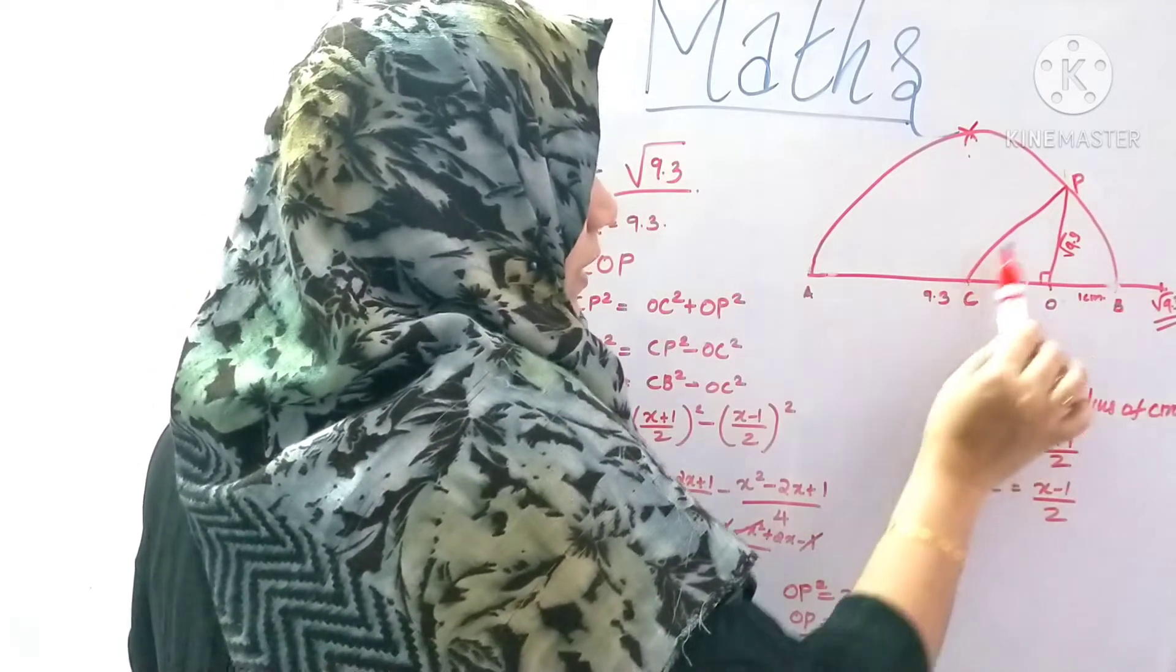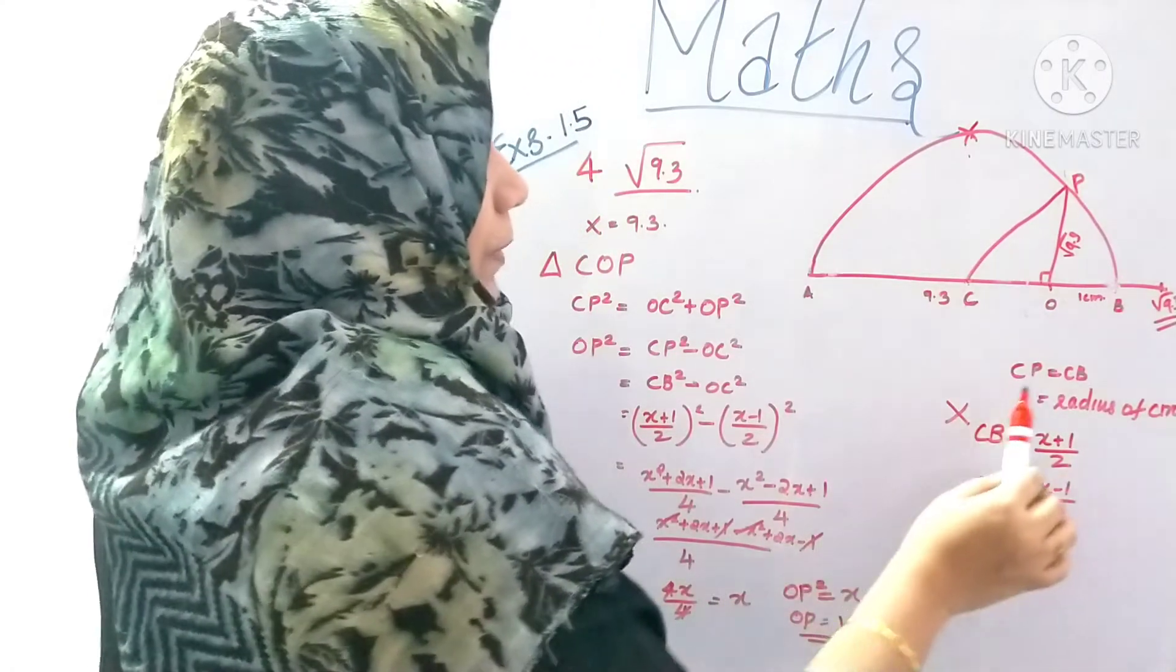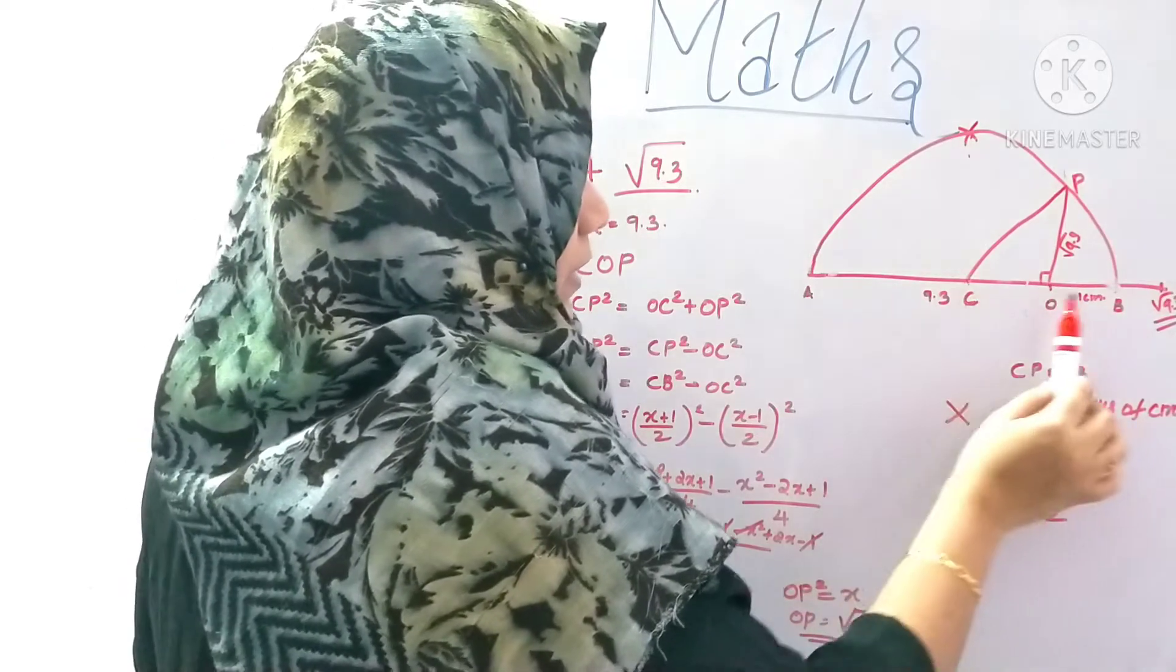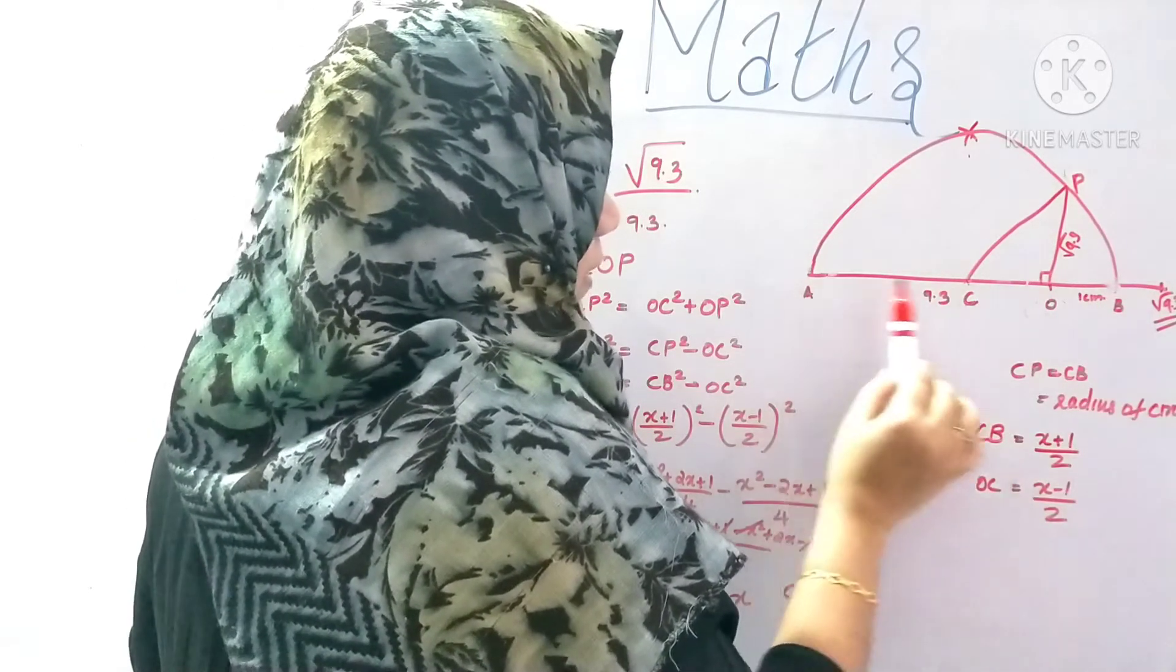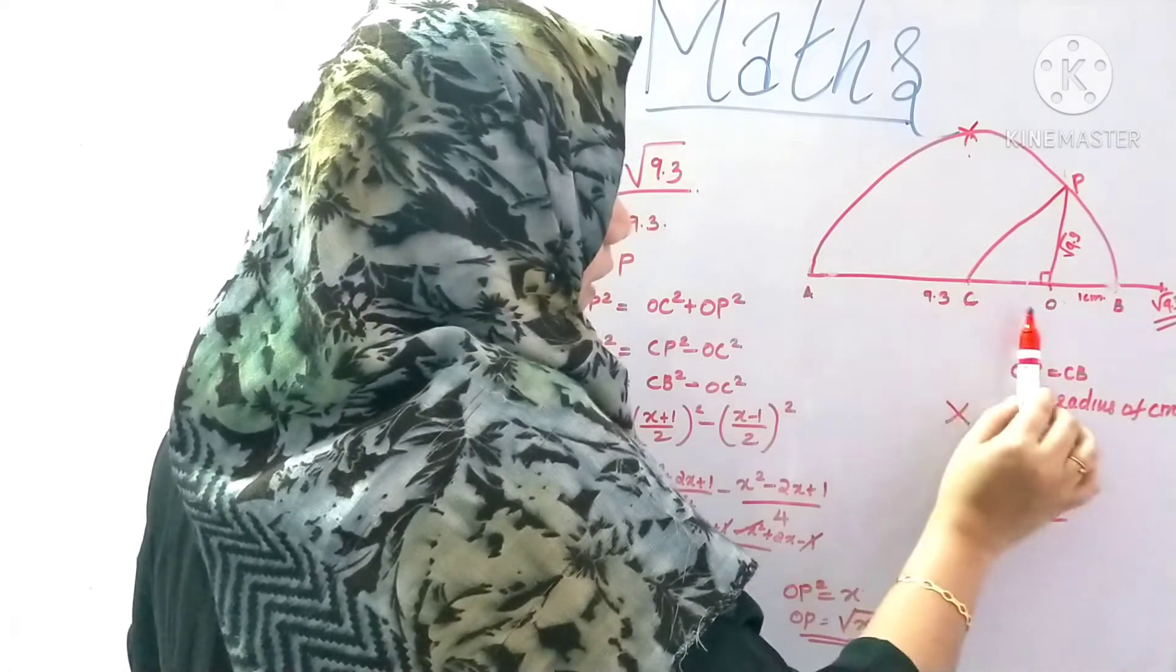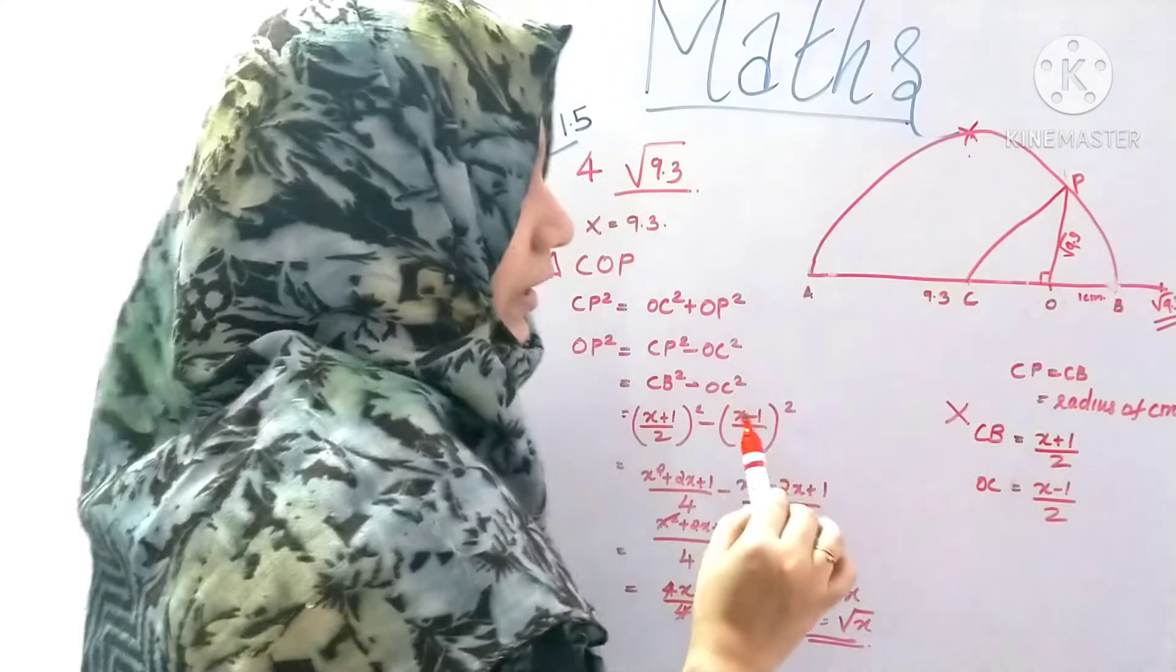What do you call CP? CP equals CB. CP is a radius. Right, then I want radius of this circle. What is CB? This is X plus 1 divided by 2 is CP.